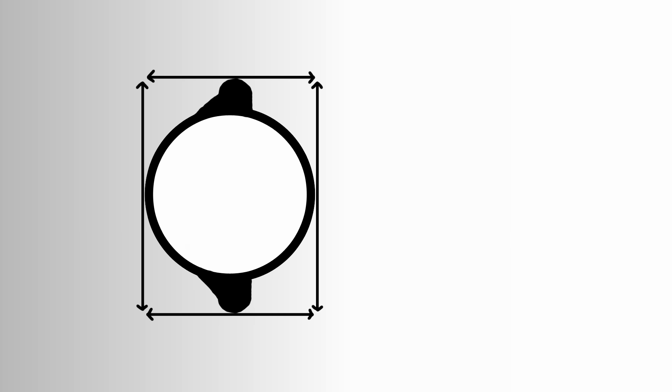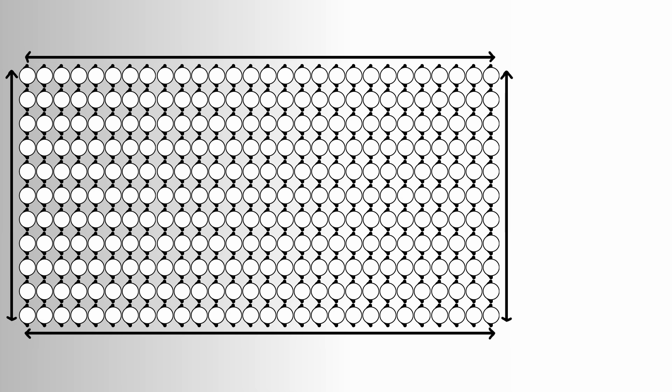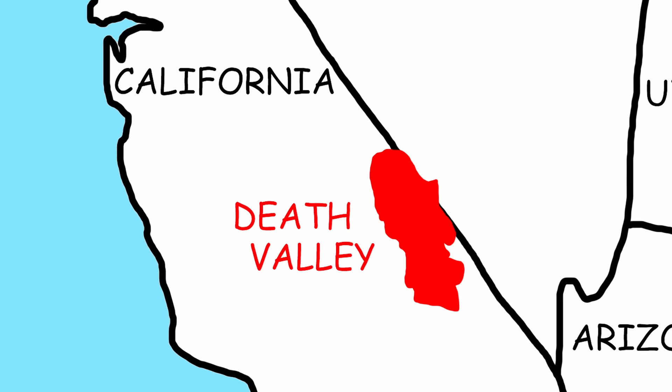Every person takes, on average, 0.2 square meters of space. Multiplied by 8.2 billion, the total area required is 1,640 square kilometers. Since Death Valley is about 8 times larger, everyone would definitely fit there.